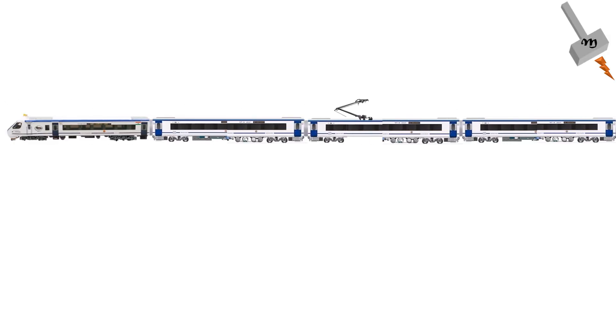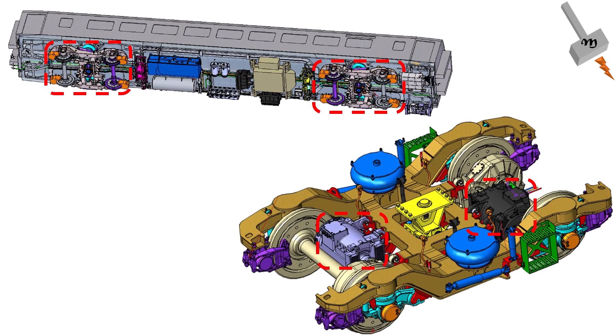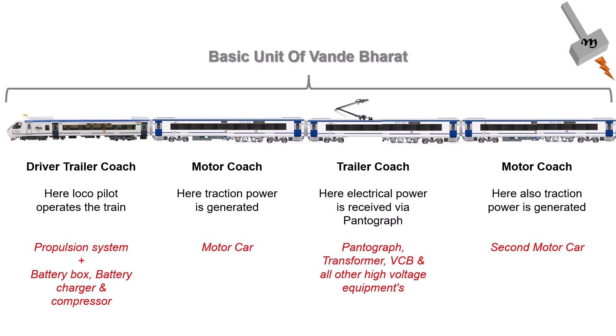Each basic unit of Vande Bharat chair-car train has four coaches, out of which two are motor coaches. Each motor coach has four traction motors and two traction converters mounted underslung of the car body. Each traction converter controls two traction motors. Input to the converter comes from the transformer kept in the adjacent trailer coach.